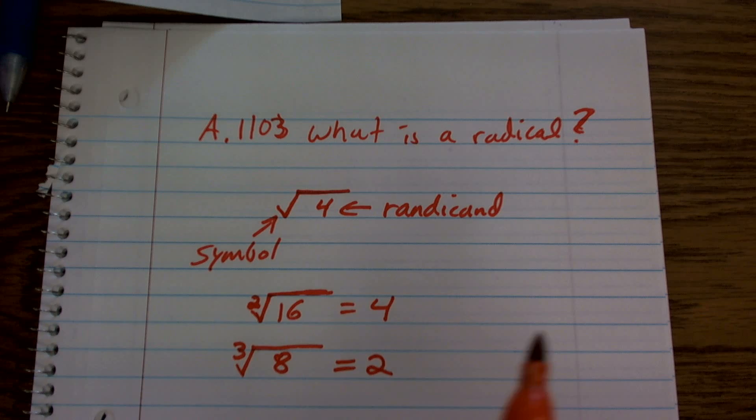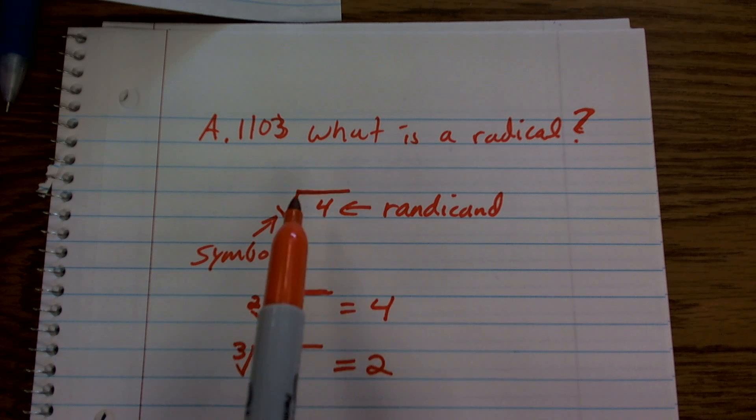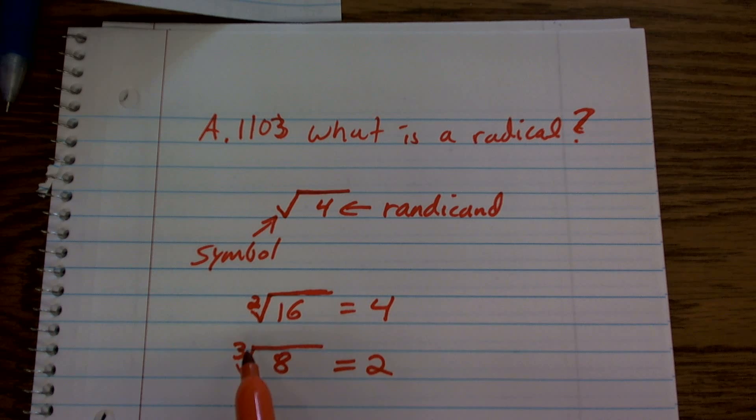So it's important for you just to understand that the square root symbol or the symbol of a radical is just this little bar here.